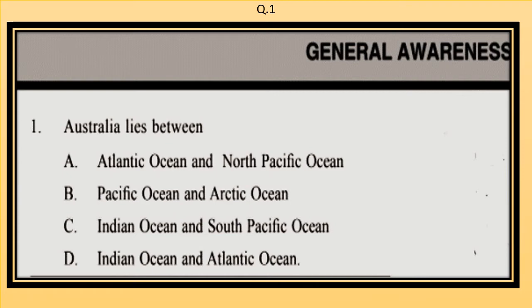Question 1. Australia lies between: A. Atlantic Ocean and North Pacific Ocean, B. Pacific Ocean and Arctic Ocean, C. Indian Ocean and South Pacific Ocean, D. Indian Ocean and Atlantic Ocean.